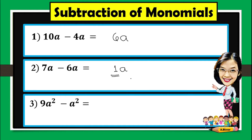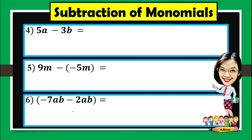Therefore the final answer will be just a. For number 3: 9a squared minus a squared — a squared here has a coefficient of 1, so 9 minus 1 is 8. Then simply copy the given variable and its exponent, which is a squared. Therefore the answer is 8a squared.